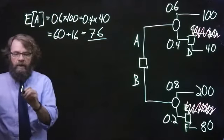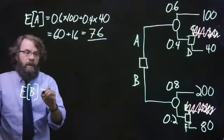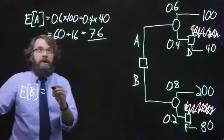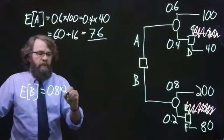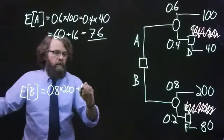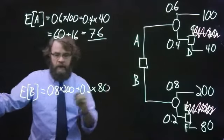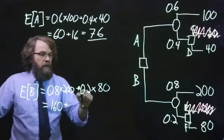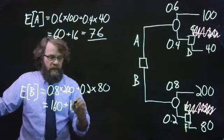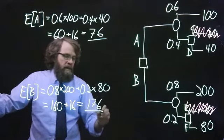Expected value of option B, we have 200. So we have an 80% chance of $200,000 plus a 20% chance of $80,000. So 0.8 times 200 is $160,000 plus 0.2 times 80 is 16. So $176,000.